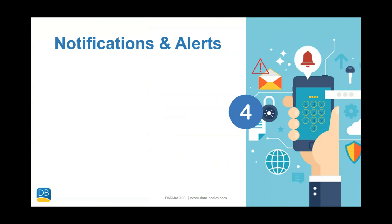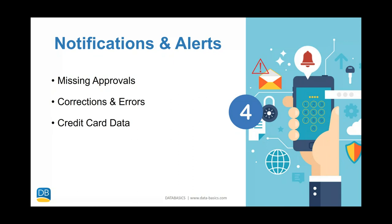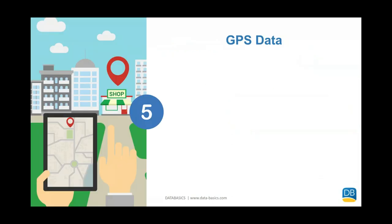Beyond simple population of data and streamlining, the next area of simplification comes through notifications and alerts. As we look at where those notifications take place, typically we're making sure approvers are getting expense reports approved, any corrections or errors are visible to the end user, and users are alerted to credit card transactions. And of course, real-time status updates — so if a manager has a question about an expense report while a user is on the road, the user can be notified and quickly provide additional details within the solution.